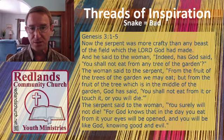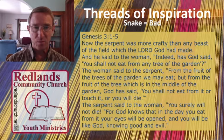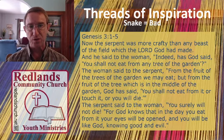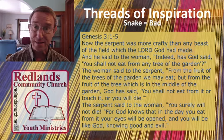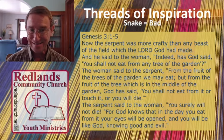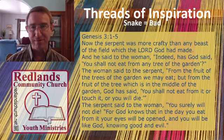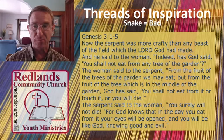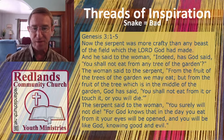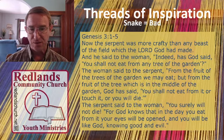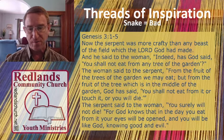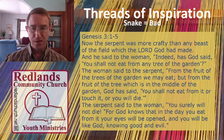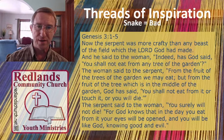Genesis 3:1-5 reads: 'Now the serpent was more crafty than any beast of the field which the Lord God had made. And he said to the woman, Indeed, has God said, You shall not eat from any tree of the garden? And the woman said to the serpent, From the fruit of the trees of the garden we may eat, but from the fruit of the tree that's in the middle of the garden, God has said, You shall not eat from it or touch it or you will die. And so the serpent said to the woman, You will surely not die. For God knows that in the day that you eat from it, your eyes will be opened and you will be like God, knowing good and evil.'